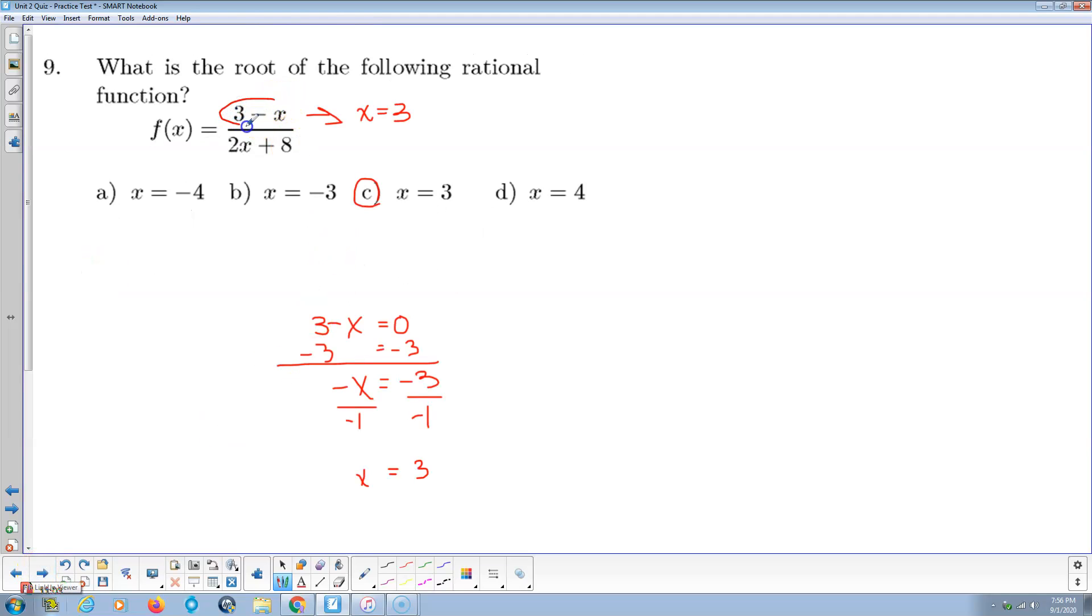What's the root? Well, that's whenever the numerator is equal to 0 and the denominator is not. And so we put 3 in here. 3 minus 3 would be 0. So the root is x equals 3. Answer C.